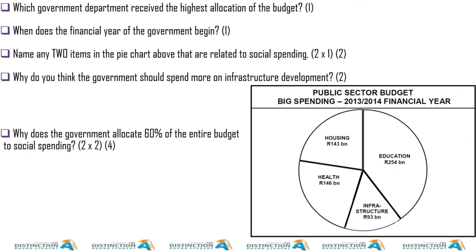Right, the next one — I see here we have a pie chart. It says 'Public Sector Budget: Big Spending.' So this is showing where the money is going. Up until this point we were mostly seeing where the money is coming from. Which government department received the highest allocation?